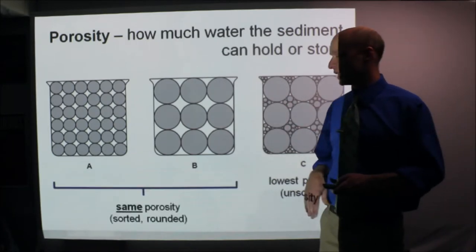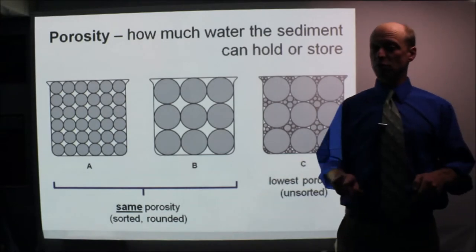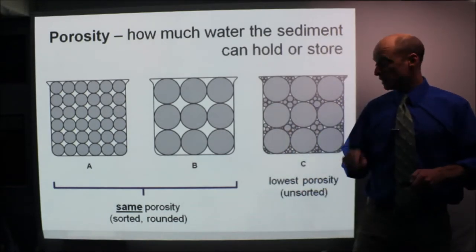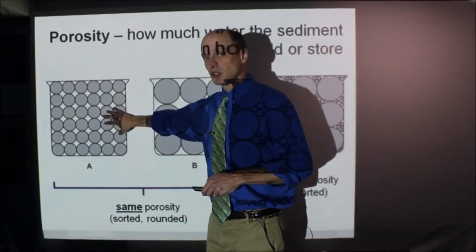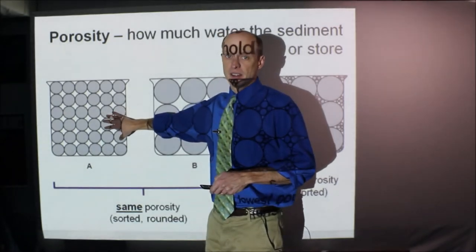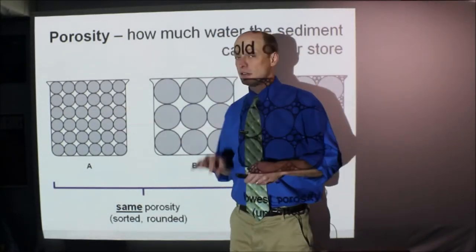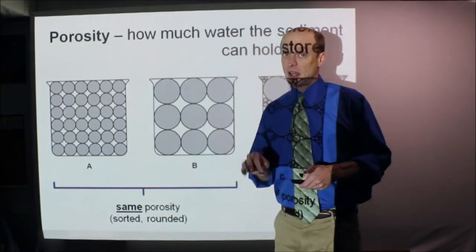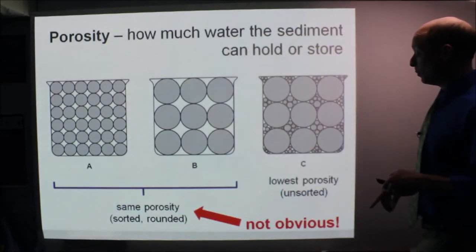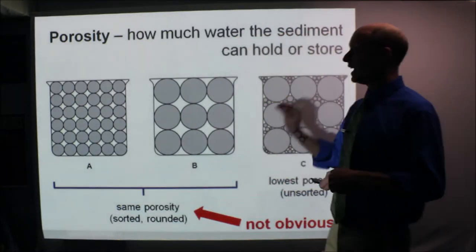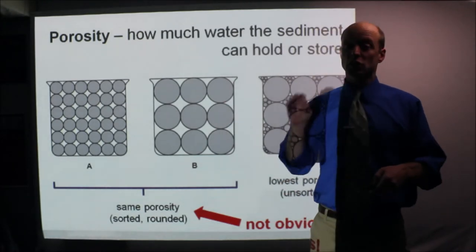Now A and B, check this out: they have the same porosity, because within each they're really well sorted, which means they're all the same size within each, and they're really well rounded. That's important. Now I put this on here: it is not obvious. You can't look at it, so you have to just commit this to memory.